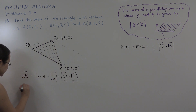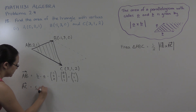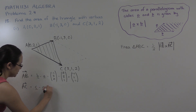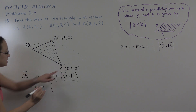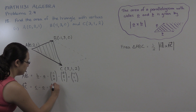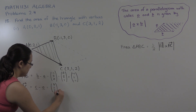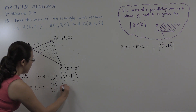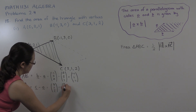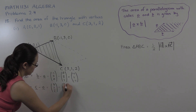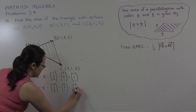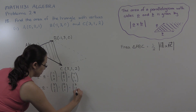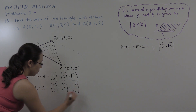The vector AC is the position vector of C minus the position vector of A. So that's C in column form, (3, 1, 2), minus A, which is (0, 2, 1). We get the vector (3, -1, 1).